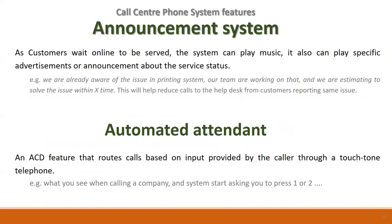The announcement system lets the customer or agent receive an announcement when picking up the phone — for example, something happening today or tomorrow, or a new company policy. It can be put onto the system and particular people or everyone can receive that announcement. The automated attendant is like the robot answering calls.